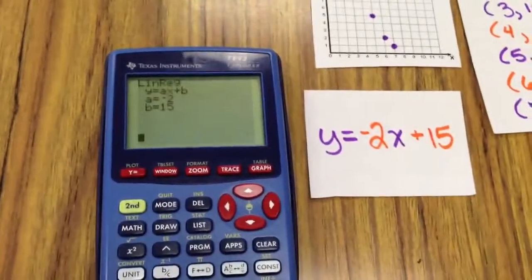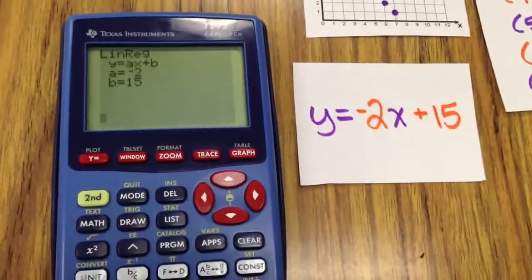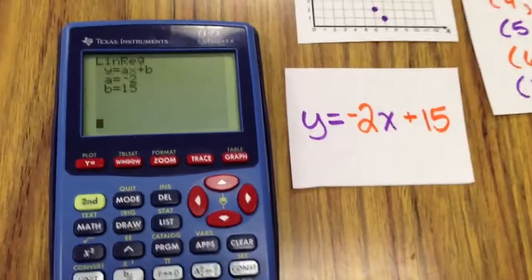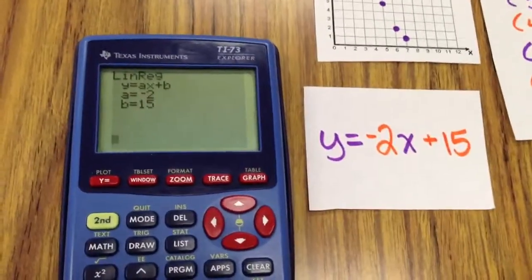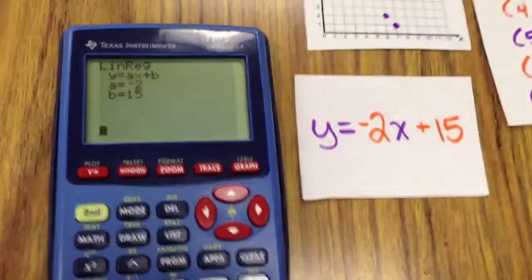Alright y'all. Looks like my answer is y equals negative 2x plus 15. Great job, y'all. Well, we just use linear regression to find the line of best fit for a scatterplot. That's terrific.